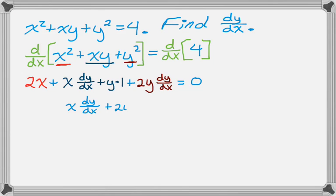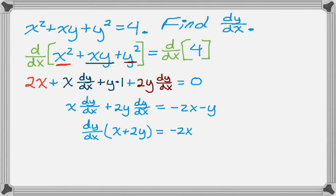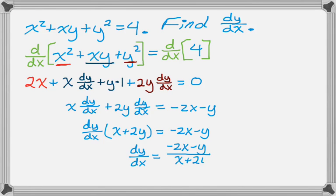Now I move everything that doesn't have a dy/dx to the right-hand side. So I'm subtracting 2x, I'm subtracting y. On the left-hand side now, factor out dy/dx to get dy/dx times the quantity x plus 2y. Then I'll divide through by that. And I have dy/dx. That's the first part of the problem.